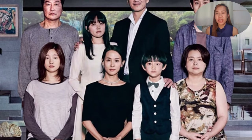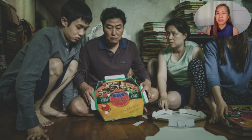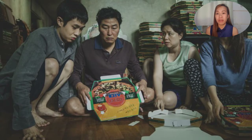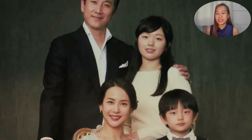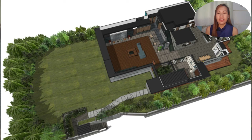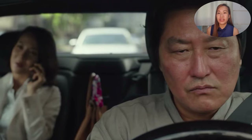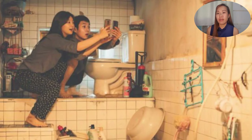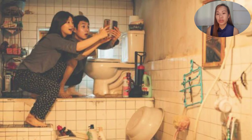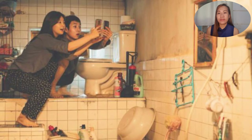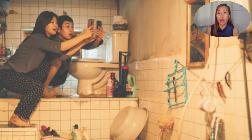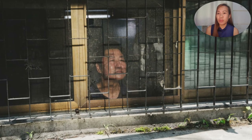It is a South Korean film featuring two main families: the Kim family, a poor family living in a basement, and the Parks family, a very wealthy family who lives in a very large mansion. In South Korea, social class is seen by how high you are above the ground or how much sunlight you get at home. This movie started with the Kim family in the basement with very little or no direct sunlight.